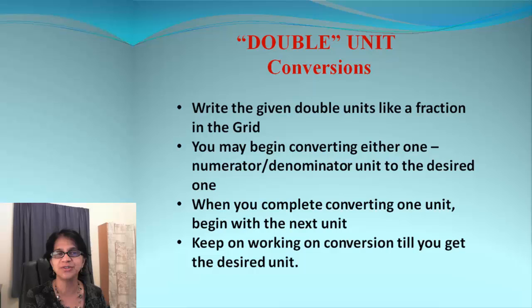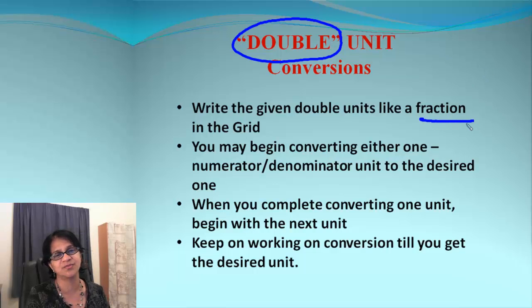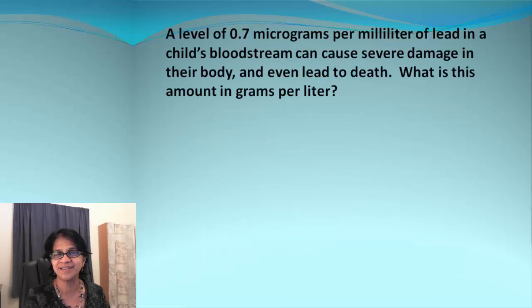So what is it and how do you work on these? Double Units, as the word suggests, has 2 units and then we go through conversions one after the other. The simplest thing to remember is we write this double unit just like a simple fraction and then we begin converting either one, either numerator or denominator, till we get the desired one. When once we are done with one unit, we begin with the next unit and we continue till we get the desired answer.